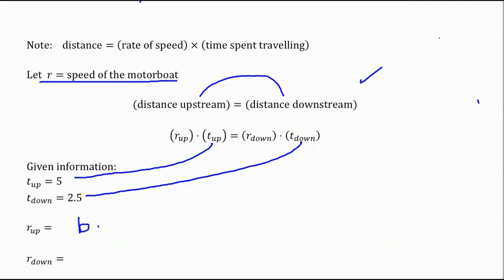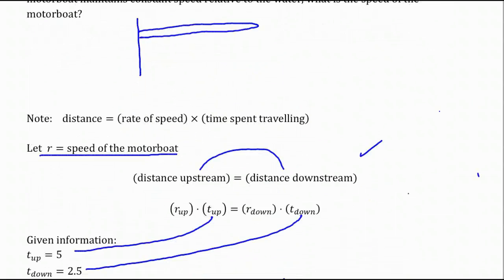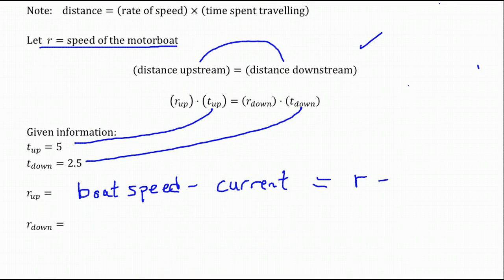We're given how long it takes to go upstream and downstream, so we can plug those numbers in. The rate upstream, you're fighting the current. You're going to take your boat's speed and subtract off the speed of the current. In this case, that's going to give us r minus the speed of the current, which is 3 miles an hour. So we get r minus 3.